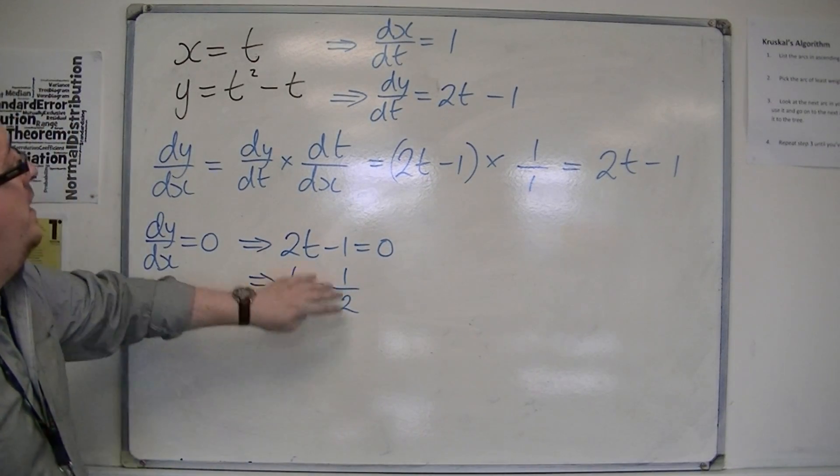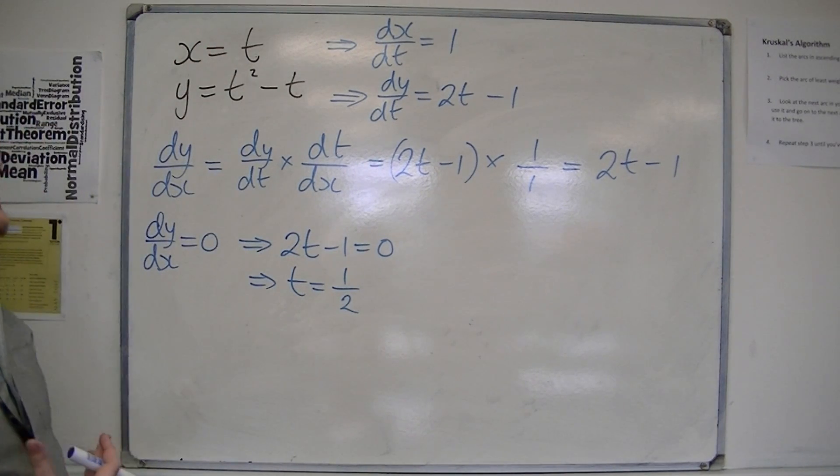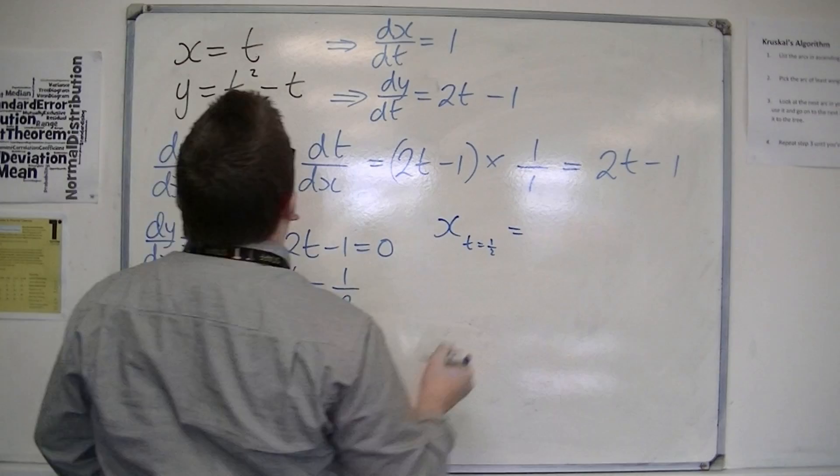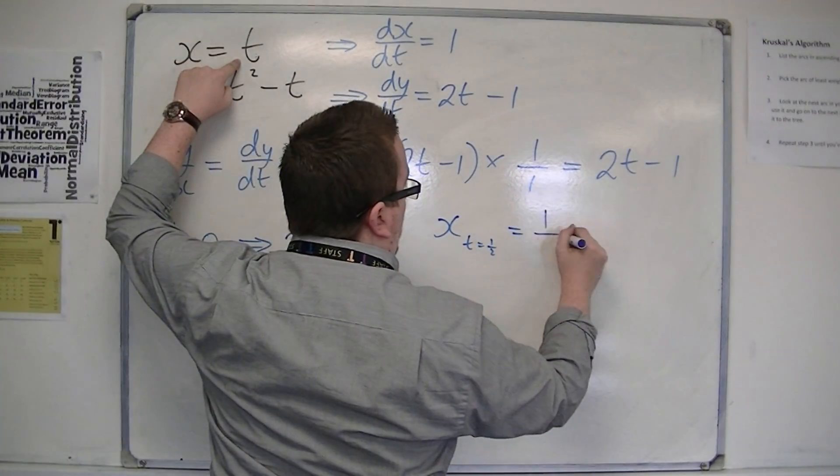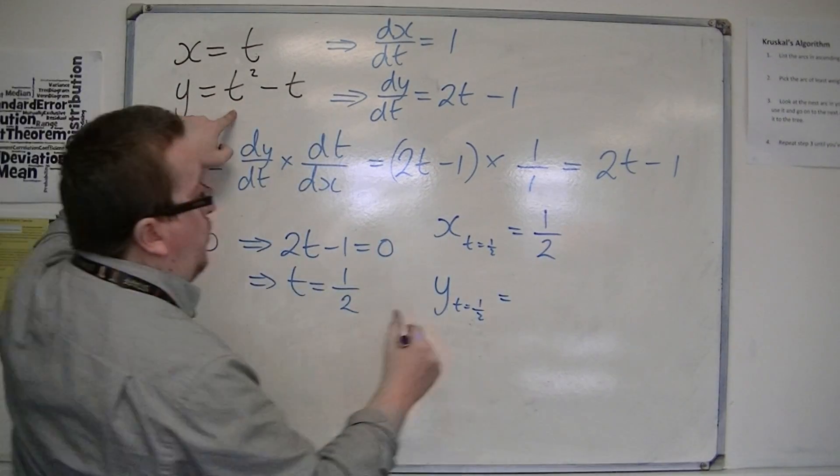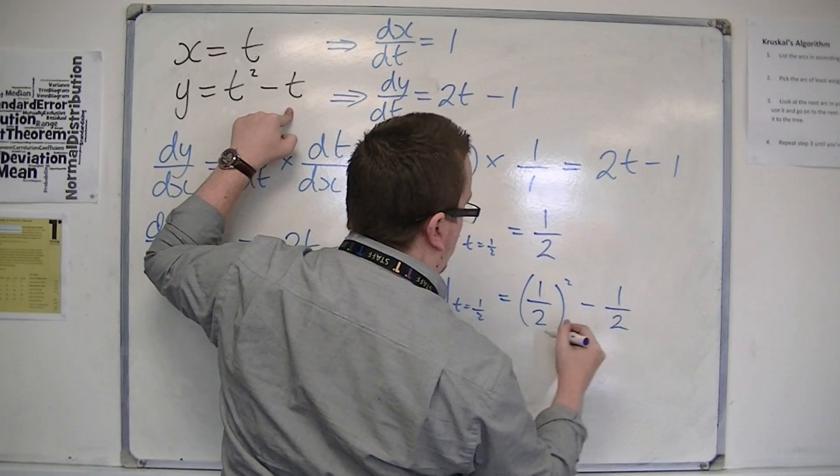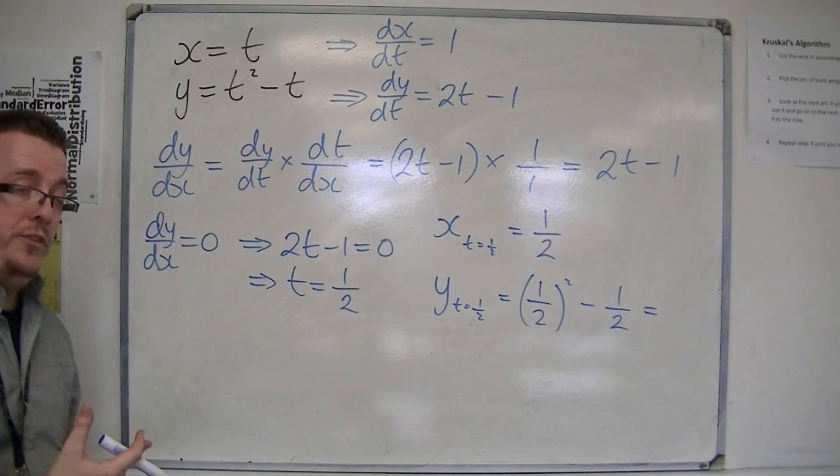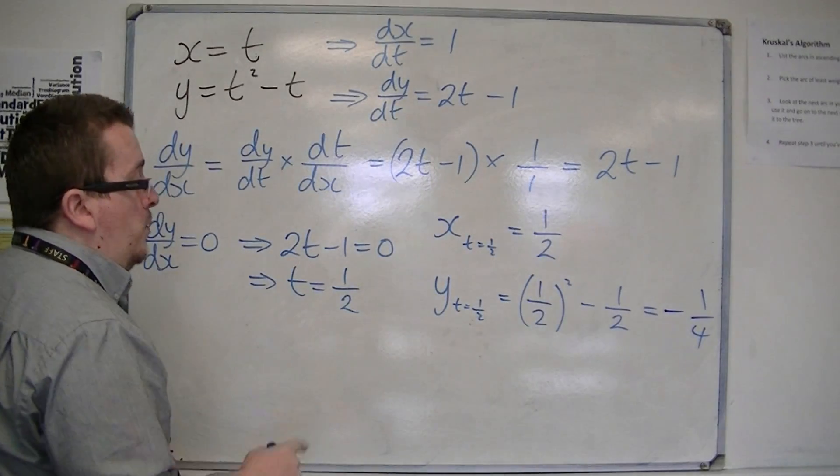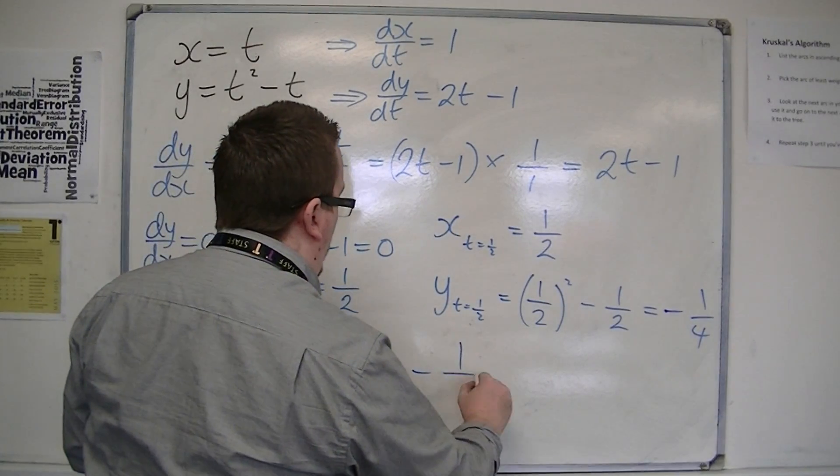So I can substitute t equals 1/2 into x and y to find the coordinates of that stationary point. x when t equals 1/2 is equal to 1/2. y is equal to 1/2 squared minus 1/2. 1/2 squared is 1/4, take away 1/2 is minus 1/4. So the stationary point occurs at (1/2, -1/4).